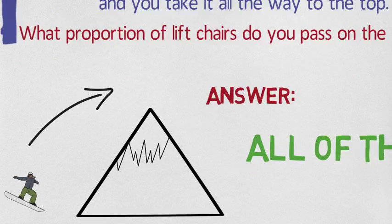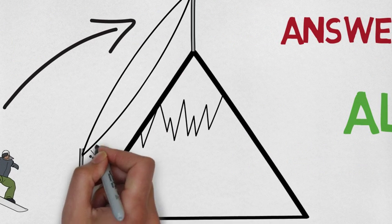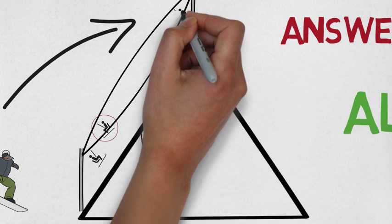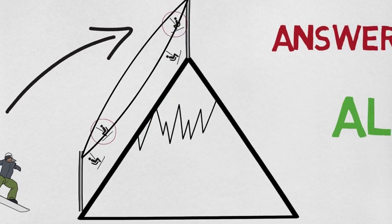The answer? All of them. At the beginning, you pass the chair directly behind you on the cable. And just before you exit, you pass the chair directly in front, that is now on its way back down the mountain.